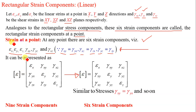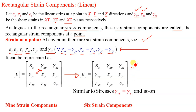Strain at a point can be defined by 9 components arranged in a matrix: epsilon x, gamma xy, gamma xz; gamma yx, epsilon y, gamma yz; and so on. But since gamma xy equals gamma yx and so on, the 9 components are reduced to 6 components.